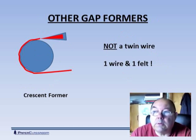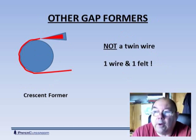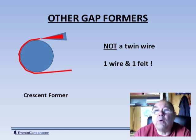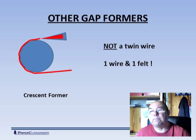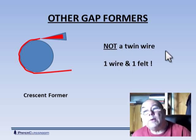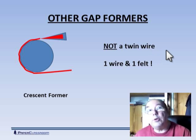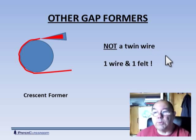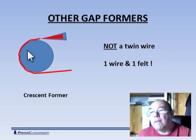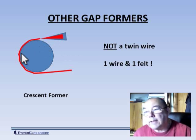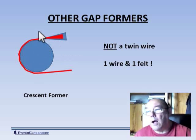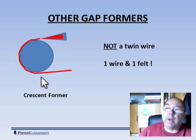The most modern type of gap former today is known as the crescent former, and this is really taking over from the other two systems. The interesting thing about the crescent former is, as it says here, it's not a twin wire former, we don't use two wires, and this is where the novelty comes in. We use one wire and one felt. So on the inside of this, next to this forming roll, there will be a press felt. On the outside of this, there will be the wire.